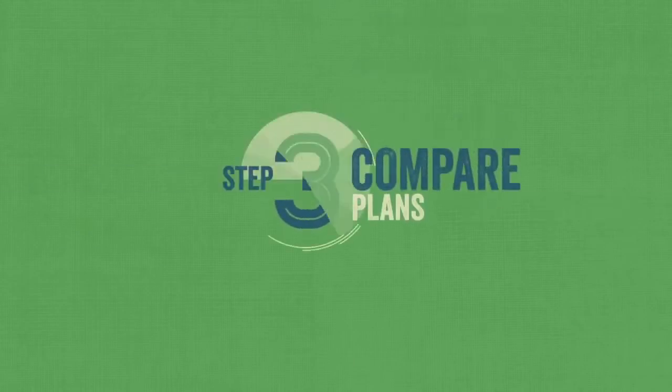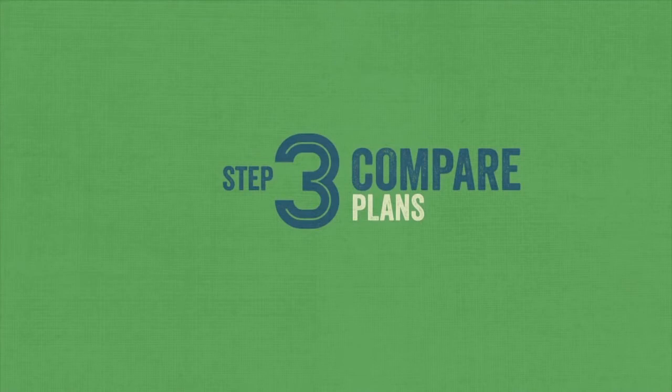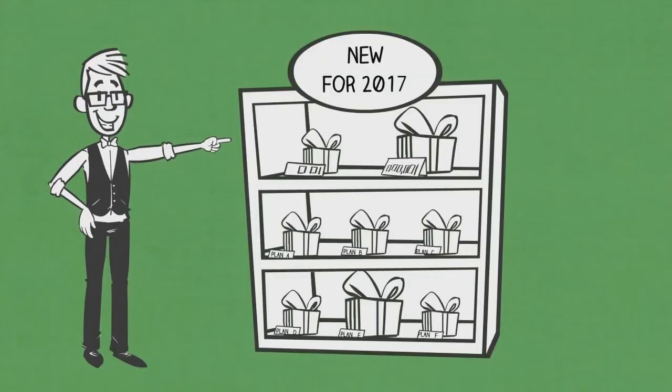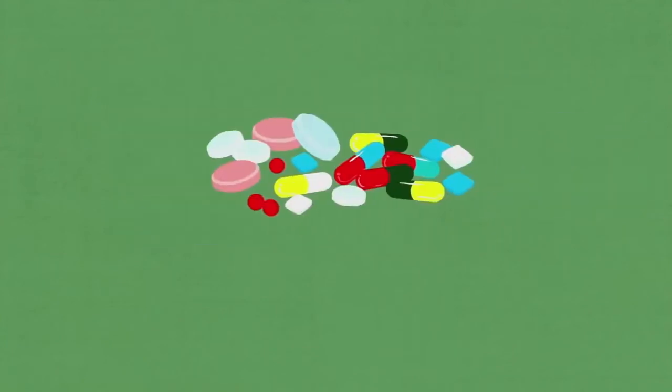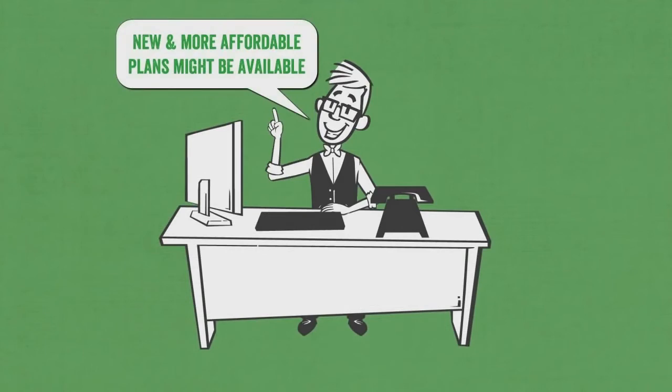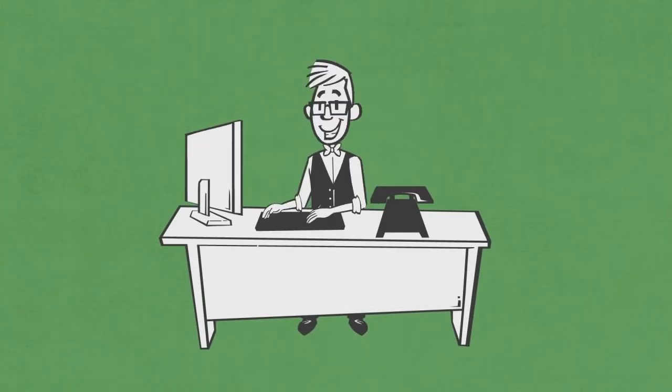Step three, compare. After you've checked your eligibility results, it's important to compare plans, costs, and benefits. There may be plans available to you that weren't an option last year. Plans can change each year, and some of these changes could affect what doctors, pharmacies, and prescriptions you can use. Taking the time to compare plans is important because new and more affordable plans may be available in your area this year.